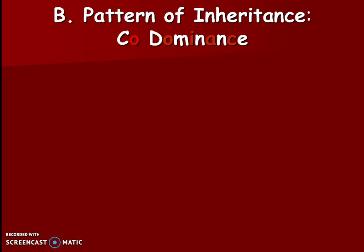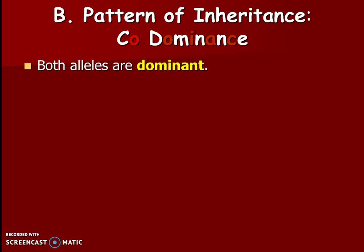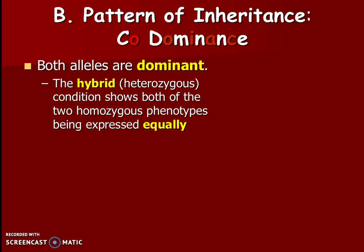The other version of weird patterns of inheritance we're going to talk about today is codominance. Notice that codominance is drawn with alternating red and white letters — that's a hint at how this works. Here, both alleles are dominant. That's our definition of codominance: both are dominant. The hybrid or heterozygous condition is going to show both of the two homozygous phenotypes equally — both things will be present, no blending.